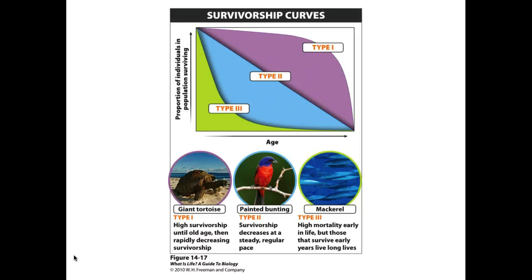Looking at a survivorship curve, we see three different types of lines. Type one survivorship is defined by the line above the purple shaded section. This is typical of organisms like the giant tortoise, where they have a high likelihood of surviving until quite an old age, and then they die rather precipitously once they reach a very high age. If you see a young tortoise, one would expect that it would survive according to the type one survivorship curve.